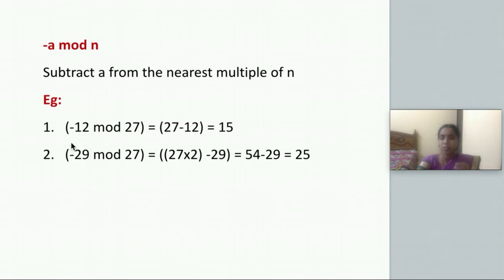We can see another example: -29 mod 27. So 29 is greater than 27, we can take the next multiple, that is 27 times 2, which is 54. From 54 we can subtract 29, we'll be getting 25.